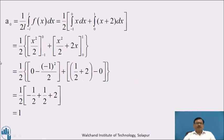Now we will calculate the Fourier constants. First, a₀ = (1/2L) ∫₋ₗᴸ f(x) dx = (1/2)[∫₋₁⁰ x dx + ∫₀¹ (x+2) dx]. Integrating: = (1/2)[x²/2 from -1 to 0, plus x²/2 + 2x from 0 to 1].